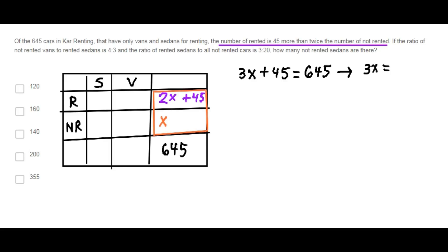3 times x is 600, x equals 200. This is 200, therefore, this is 445.